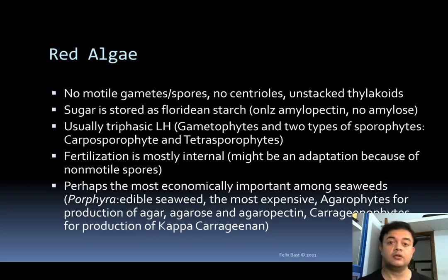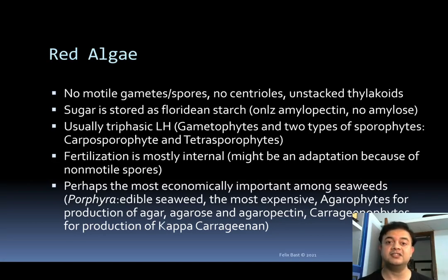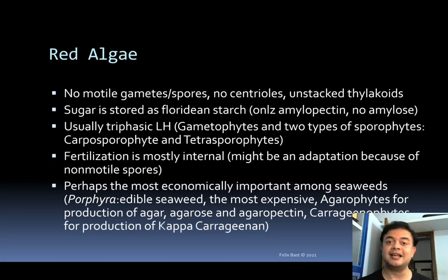Carrageenan-producing algae — caraginophytes like Kappaphycus or Hypnea — are used for the production of kappa-carrageenan, which is a food additive. You add it to food to give a typical gel-like, jellifying potential — like pudding or ice cream. You can see agar gel itself — these are basically kappa-carrageenan, which is absolutely non-toxic. Several studies say that kappa-carrageenan and similar gelling chemicals are really good for the gut microbiome as dietary fiber.